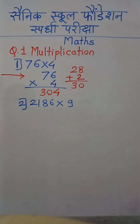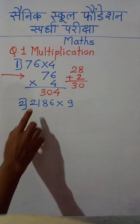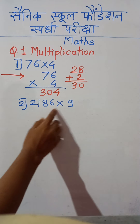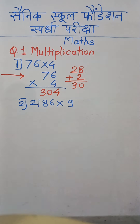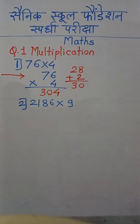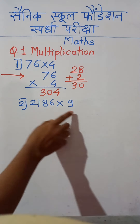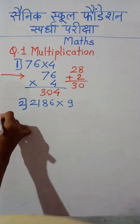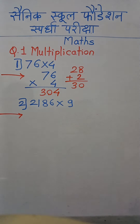Now suppose the next example is 2186 multiplied by 9 — that is a 4-digit number multiplied by a 1-digit number. Let us see how we can calculate this multiplication.